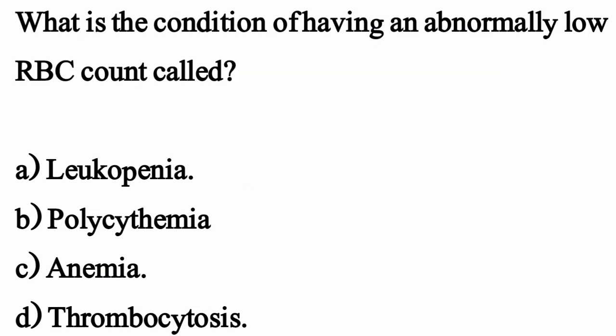What is the condition of having an abnormally low RBC count called? The correct option is Option A: Leukopenia.